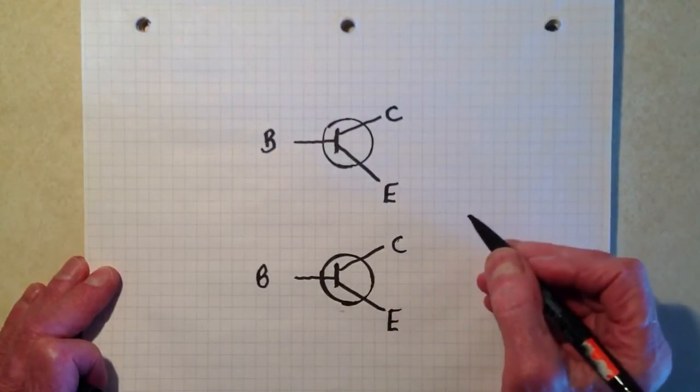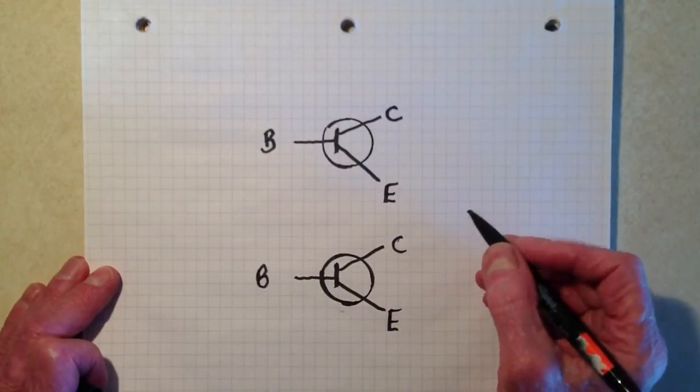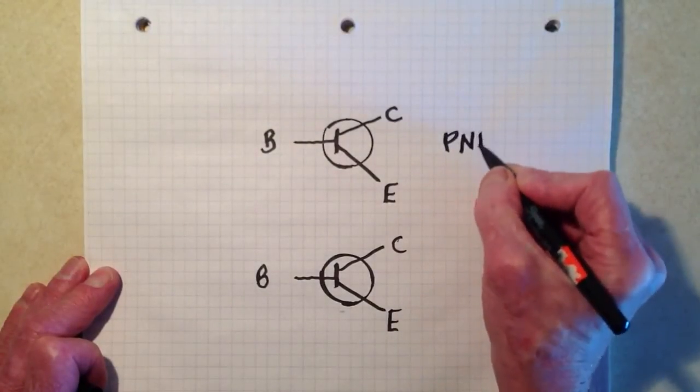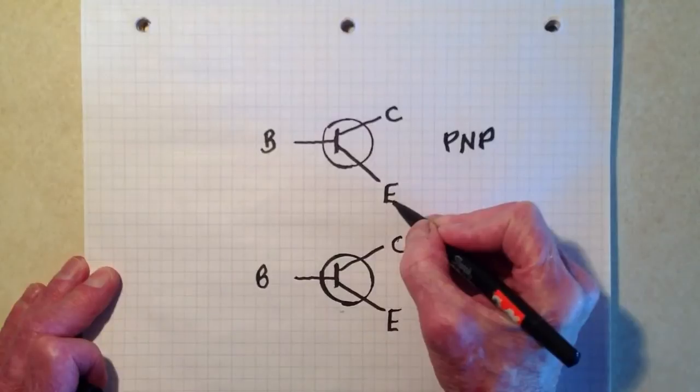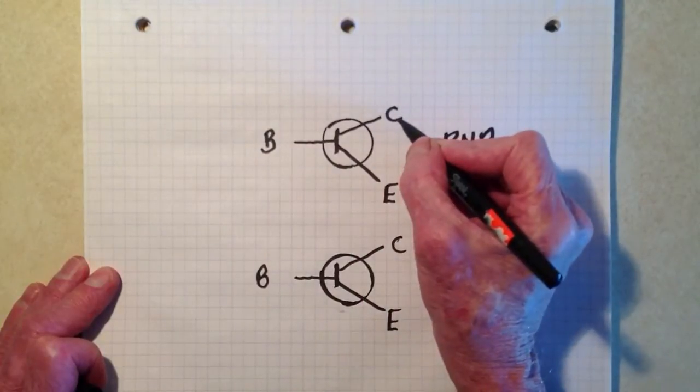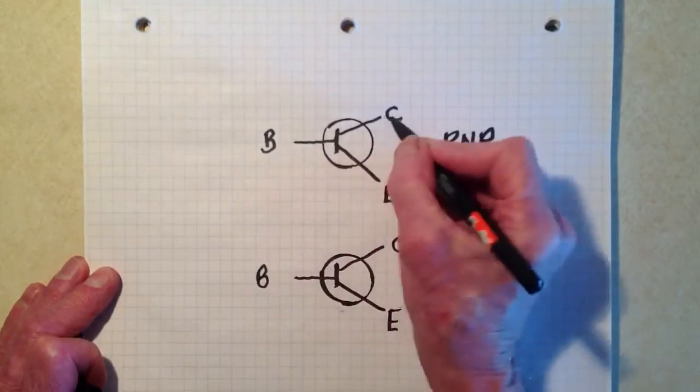Now there are two types of bipolar transistor. One of them called the PNP type, because the emitter is P-type semiconductor material. The base is N-type. The collector is P-type, PNP. We indicate that by drawing an arrow at the emitter that points in towards the base.